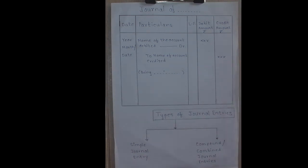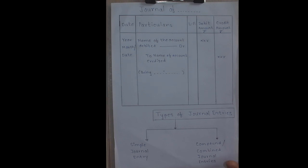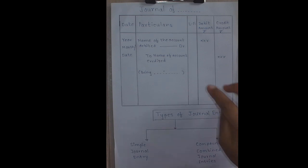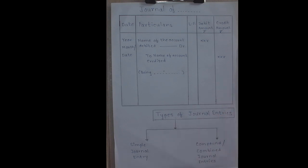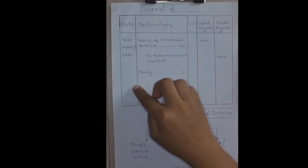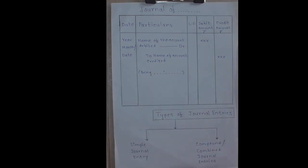The word journal is derived from a French word 'jour' which means a day. Therefore journal means a daily record. A journal contains daily records of a business transaction, hence it has been named so. As soon as the transactions take place, its debit and credit aspects are analyzed and first of all recorded chronologically — that means in the order they occurred. A journal is a book of original entry or primary entry.